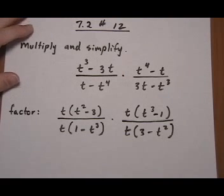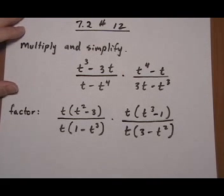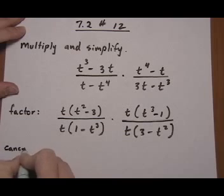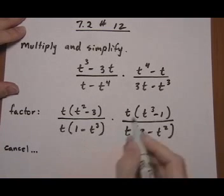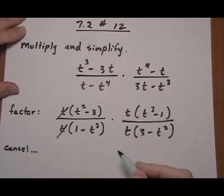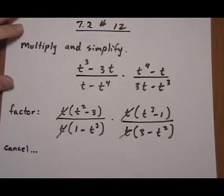And now that we've factored, we want to do as much canceling as possible. So the canceling is going to take a couple of steps. So first of all, everywhere there's a t, top and bottom t cancel, top and bottom t cancel. So we can get rid of those.